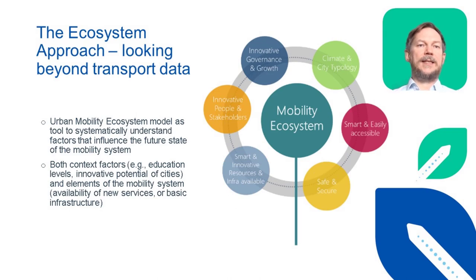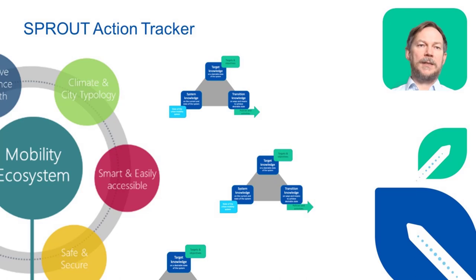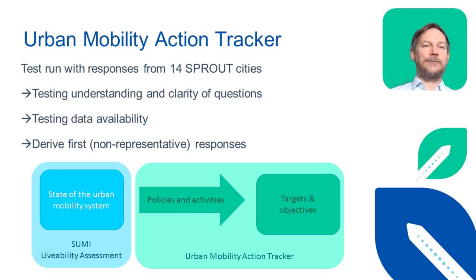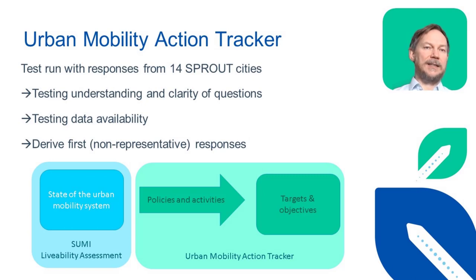As a structuring element, we use the ecosystem approach developed in Sprout, which breaks down the e-mobility system into six dimensions: governance, climate and environment, accessibility, safety, resources, and stakeholders. For each of those elements, we used a triple approach to understand the state, the objectives, and the activities of urban decision makers. I will give an outline of the first findings of the tracker — results of a test run with Sprout cities, meant to assess the feasibility of the tracker. Due to the limited number of 14 participating cities, the results are of course not representative. More encompassing results are provided in the Sprout D6.2 report, linked in the materials section.